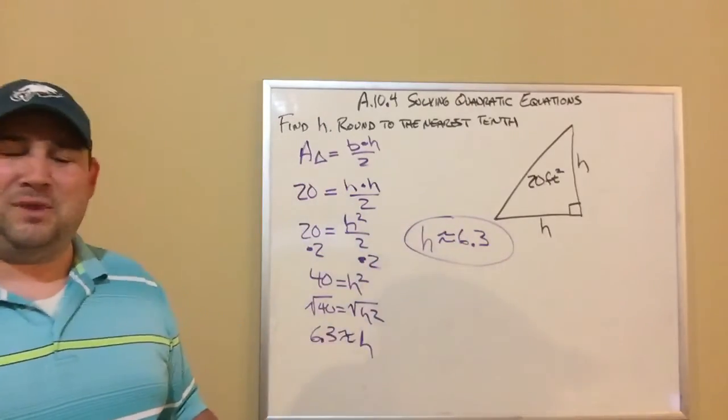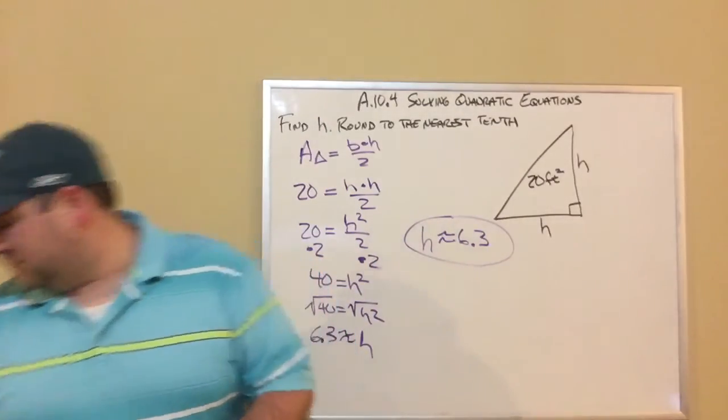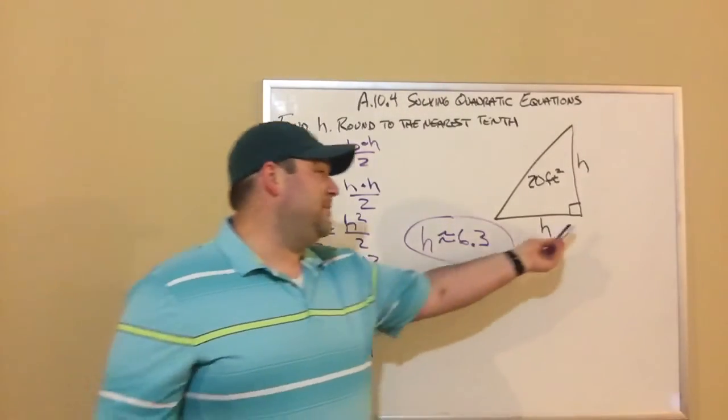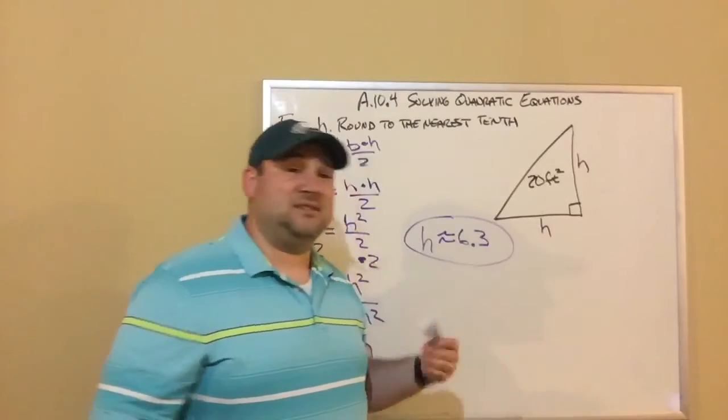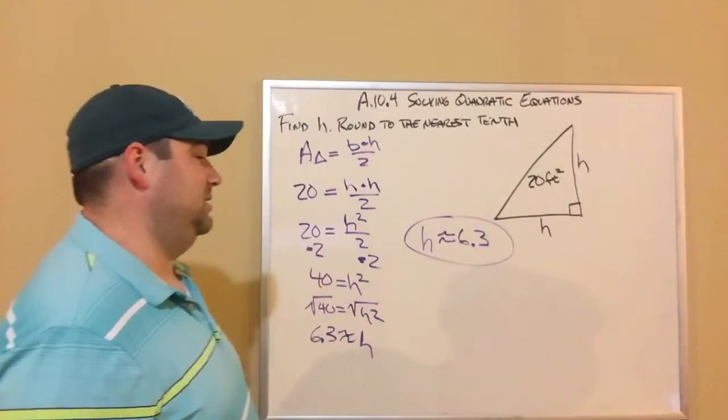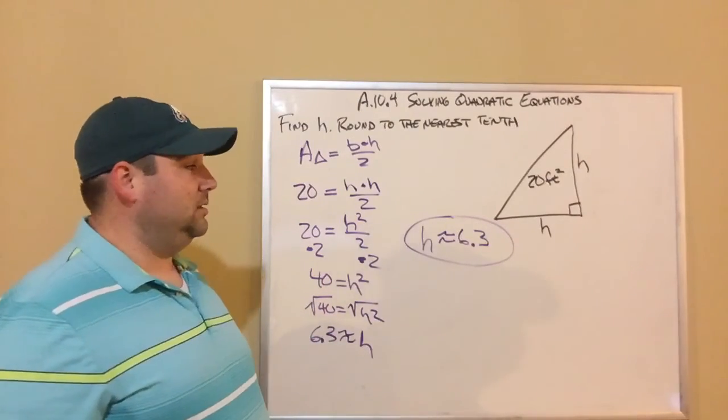Notice I didn't do plus or minus, unlike the examples, the first examples where I had plus or minus. The reason being is we're talking about distance here. This is a distance of a side of a triangle. It can't be negative. So our answer is just H is approximately 6.3.